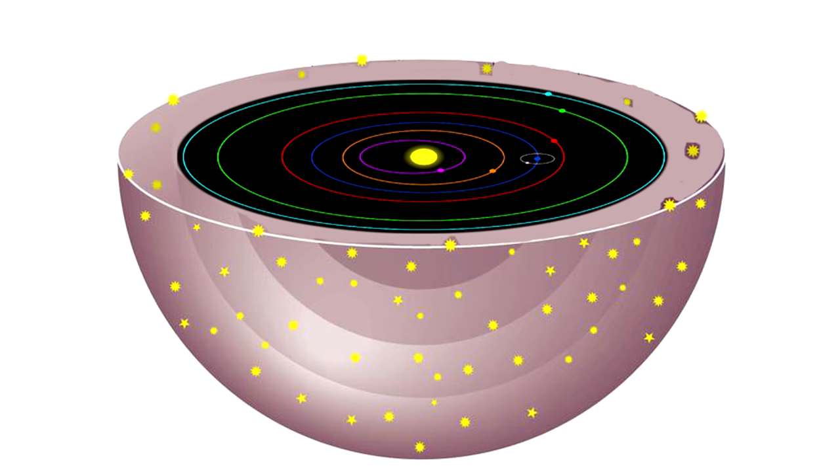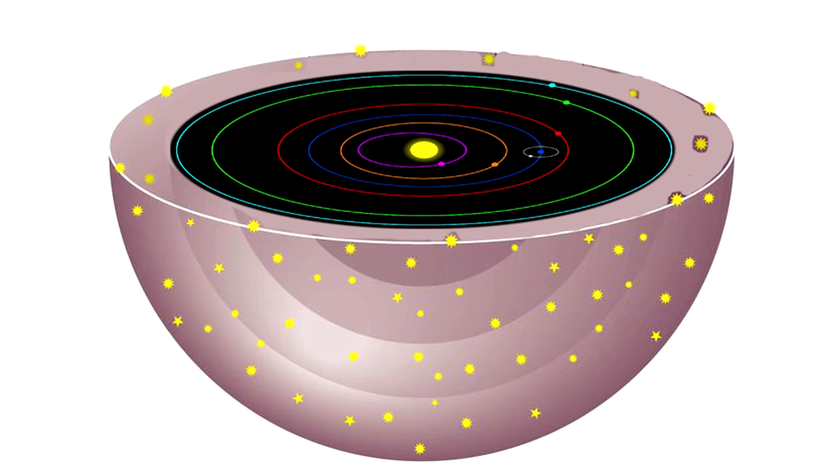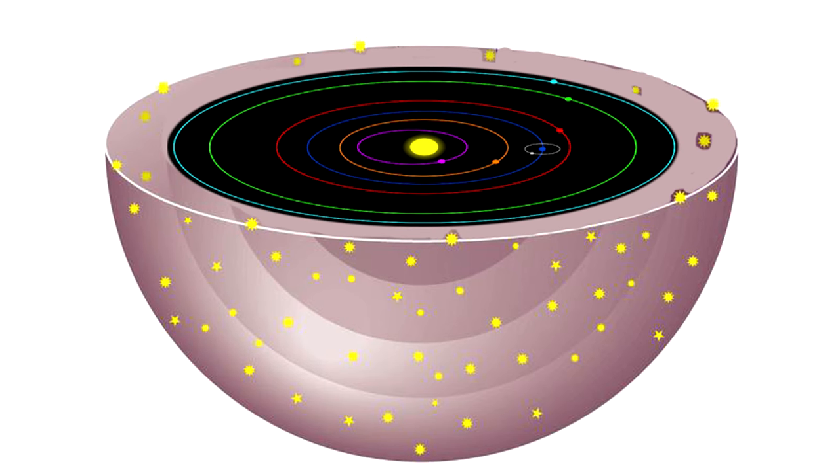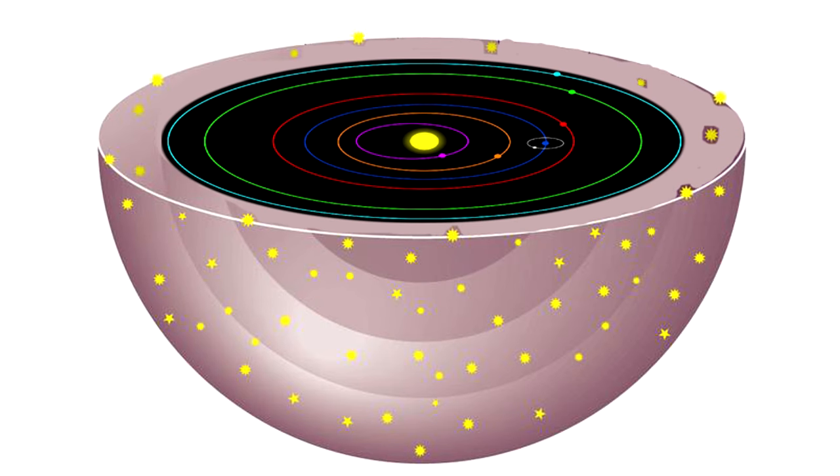Parallax measurements showed us that the sun was at the center of our planetary system, but no one could find any parallax in the stars. Not Tycho Brahe, not Kepler, not Galileo, not even Newton.